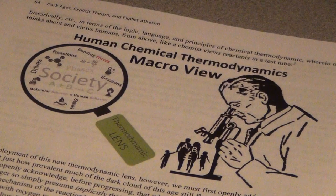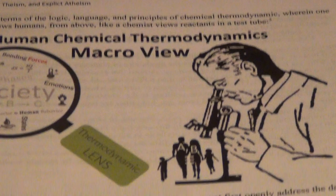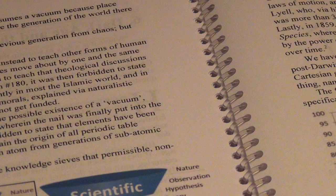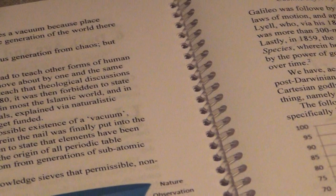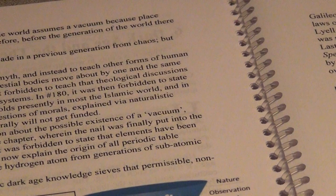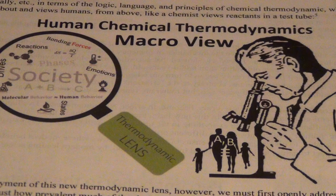Here we have the way to get out of the confusion right here. It's called the human chemical thermodynamic lens. This is a 2014 view from Mark Donahue, chemical engineer, and Richard Kilberg in their leadership organizational behavior, a thermodynamic inquiry article.